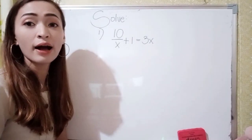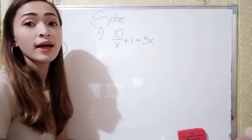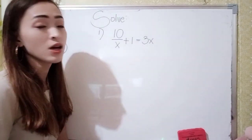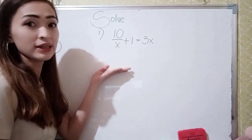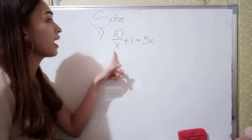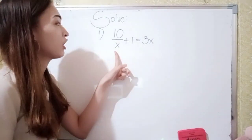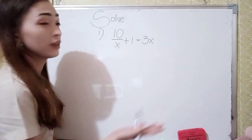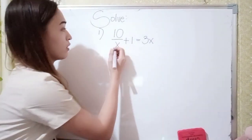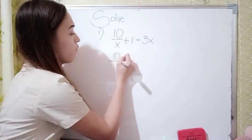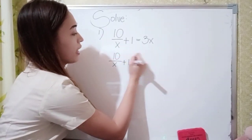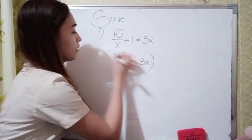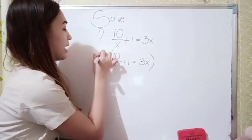For example number one, solve 10 over x plus 1 equals 3x. What we're going to do first is remove the denominator, so we need to multiply both sides by x. It will become 10 over x plus 1 equals 3x, multiplied on both sides by x.